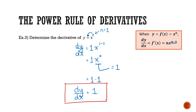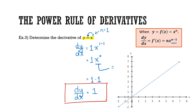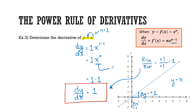Let's relate this back to what a derivative is — the slope of the function. For y = x, we get a linear graph. Since it's linear, the slope is the same throughout. As x increases by 1 unit, y increases by 1 unit, giving a slope of 1. That is consistent with our first derivative of 1, which measures that constant slope.